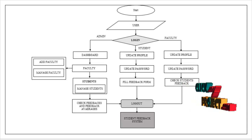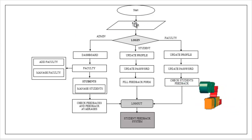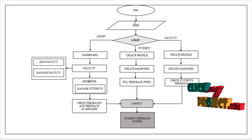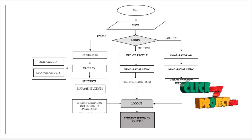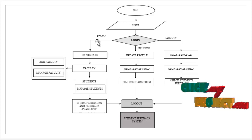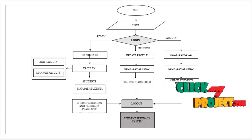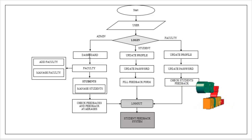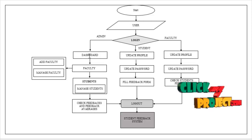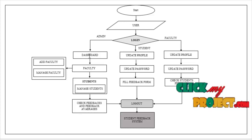This is the flow for our process. First, we start our process. The user can be either admin, student, or faculty. If the user is admin, the admin has some list of features. First, the admin has a dashboard. In the dashboard, the admin can view how many faculties are there and how many students are registered, and how many feedbacks have been filled. These details will be present in the dashboard.